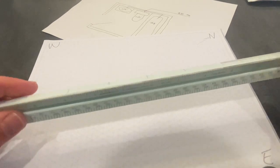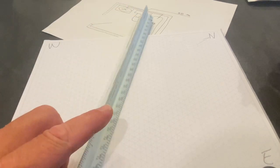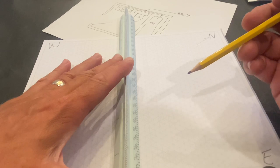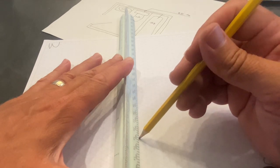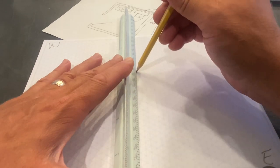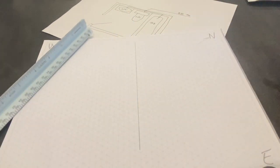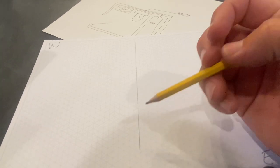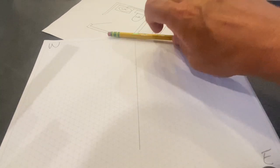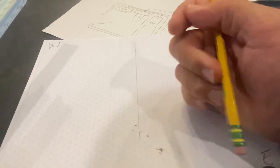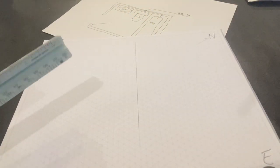So the first thing we're gonna do is we need to establish our up and down line. So I'm just going to take this right here and let's just go from here. I'm just going to lightly put a mark right there. Very lightly. You can see that, I can see that, perfect.